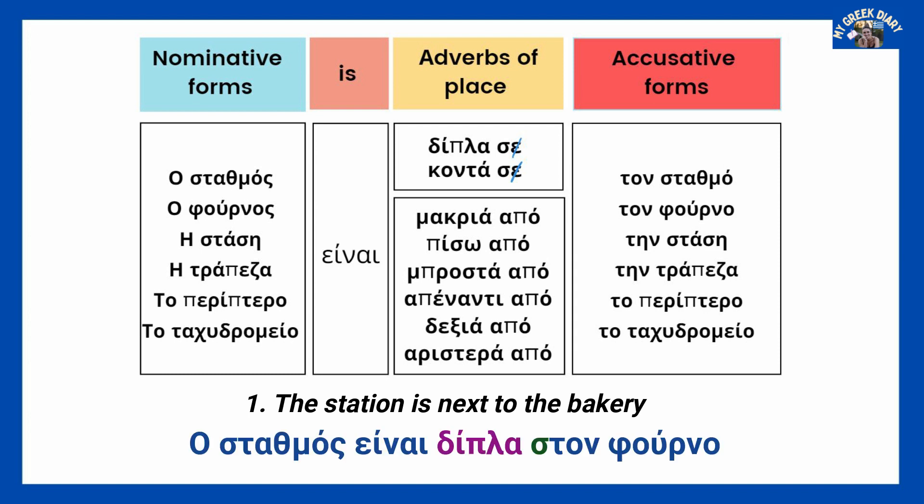O ESTADMÓS INE DIPLA STON FURNO. O ESTADMÓS is in the nominative form. INE. And we add the adverb — in this case, DIPLA — with the preposition SE. We must drop the epsilon, combined with the accusative form of FURNO: TON FURNO. So, O ESTADMÓS INE DIPLA STON FURNO.